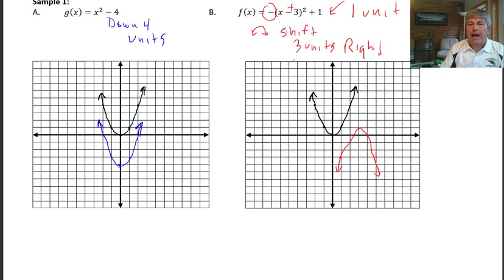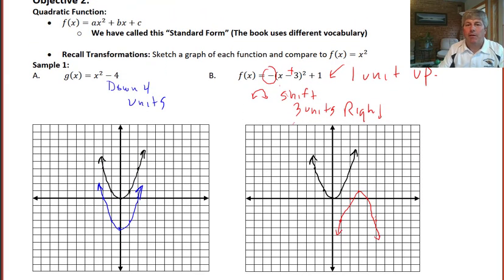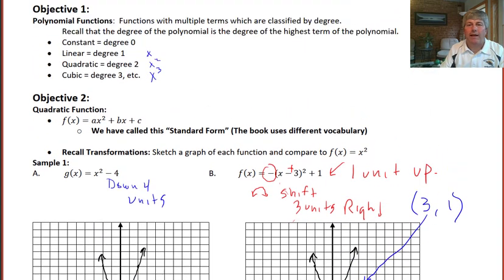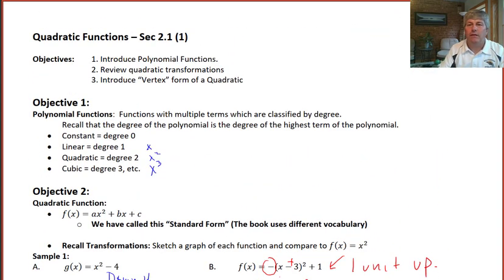So going back, our previous sample problem was already in vertex form. So our vertex here we can see now was at 3, 1. And sure enough, there it was. So you've been introduced to vertex form. We've sketched a graph of a parabola. And we'll get some more practice on this when I see you in class.